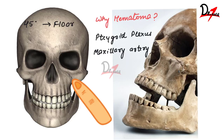Another disadvantage is that this area is so far inside that you cannot apply pressure to minimize hematoma formation. If the needle is not positioned properly and the solution is deposited lateral to the desired location, mandibular anesthesia can occur — because the mandibular division of the fifth cranial nerve is located just lateral to the PSA. If you move the needle too laterally, mandibular anesthesia can happen instead of PSA block.